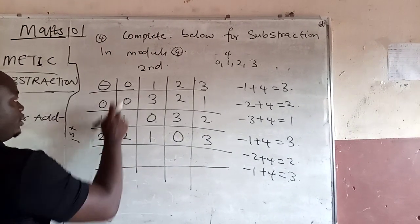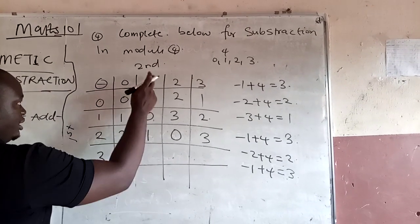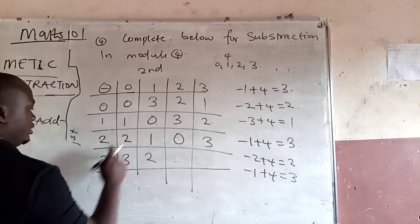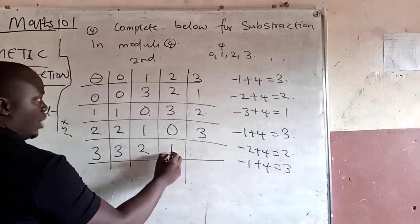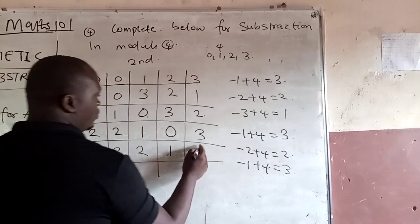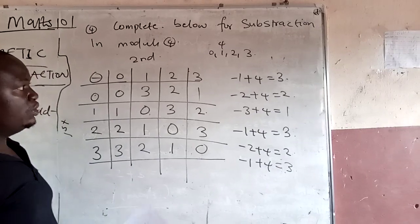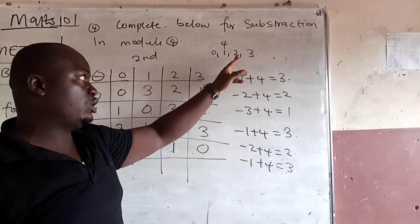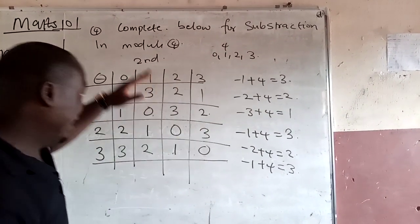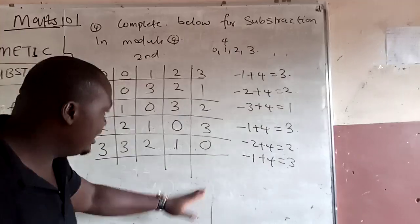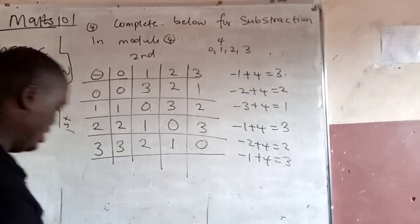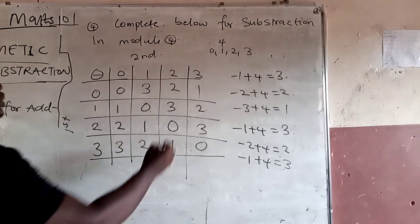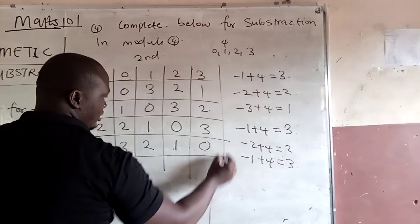3 minus 0 will give you 3. 3 minus 1 will give you 2. 3 minus 2 will give you 1. 3 minus 3 will give you 0. Remember our range is 0, 1, 2, 3. You can see that all our answers fall within our range. This is so easy.